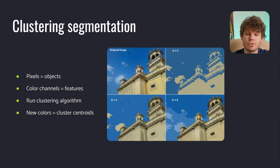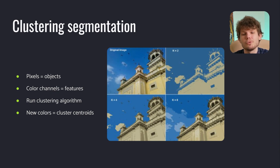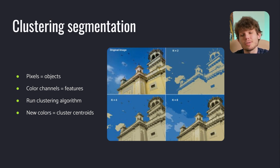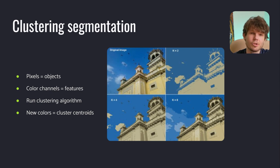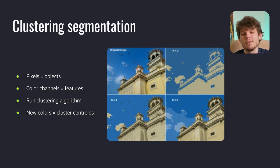The last classical approach we will cover is clustering segmentation. As the name suggests, it uses clustering algorithms as a core. First, you form an array of pixels from your image — each individual pixel is an object typically categorized by three features: the color channels. After that, you can run any clustering algorithm of your choice on these three-dimensional objects, get clusters and their centroids, and relabel each object with the label of the corresponding centroid. After that, you can reconstruct the original image with new pixel colors. Look at this image of k-means clustering segmentation from OpenCV — it works pretty well. Though it's quite simple, there are many applications where clustering segmentation works effectively.